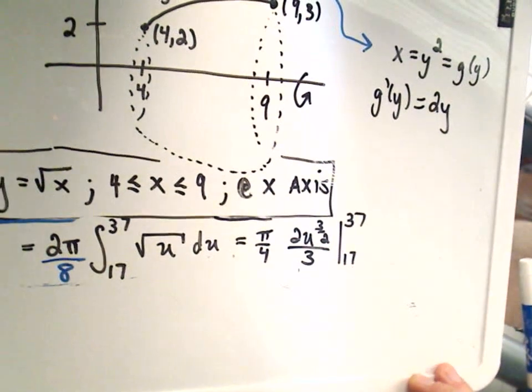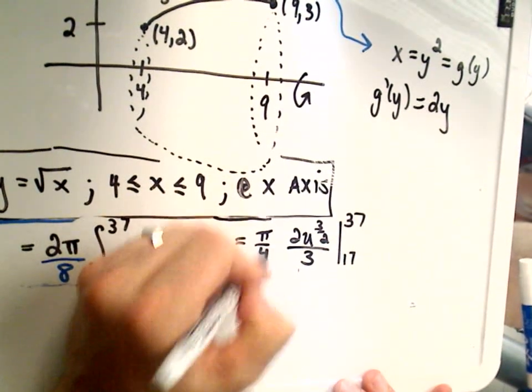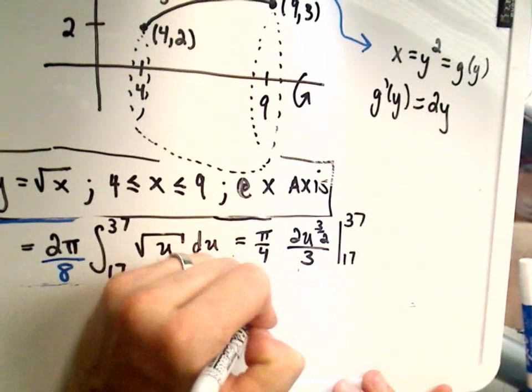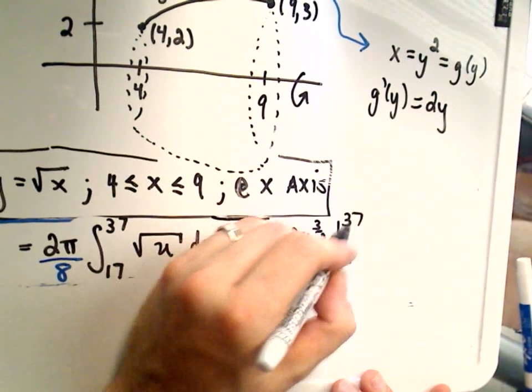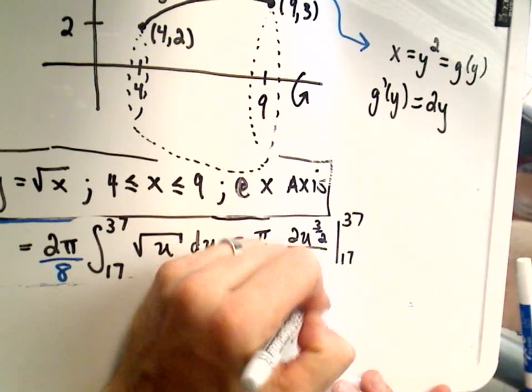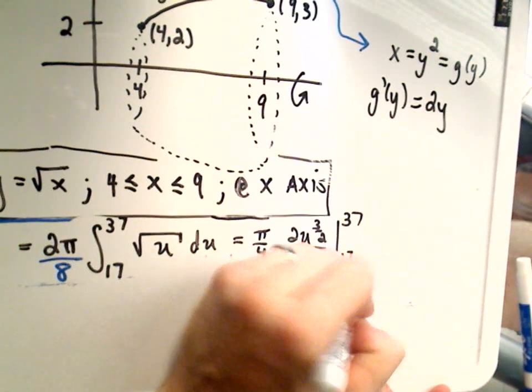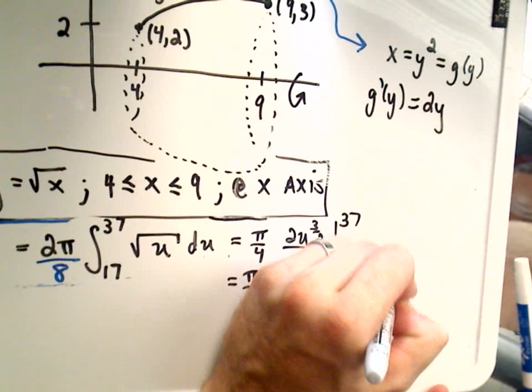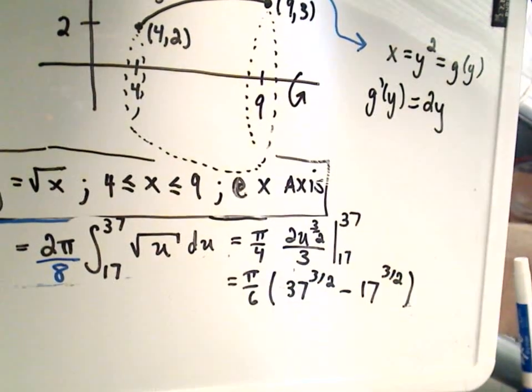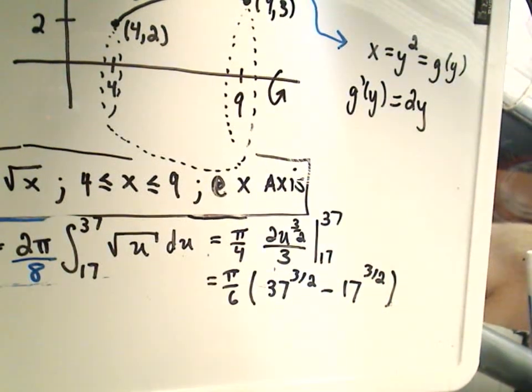So we're almost there. The pi over 4, I'll have a 2 in the denominator, so that'll give me pi over 6. I've got u to the 3 halves, so that'll give me 37 to the 3 halves power, minus 17 to the 3 halves power. And that is the same value that we calculated from before.